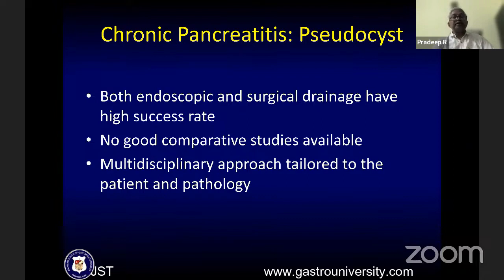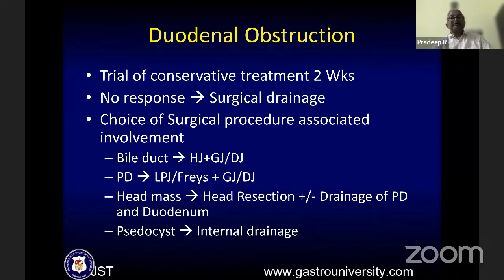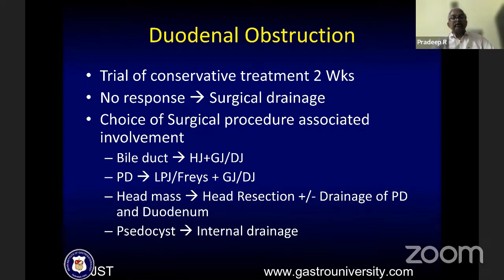Duodenal obstruction can be due to edema, fibrosis, or pseudocyst — producing a long smooth narrowing of the duodenum, sometimes associated with biliary obstruction. A trial of conservative treatment for two weeks is advocated because if it is due to edema, it usually subsides. Otherwise, depending on associated complications, bile duct drainage with GEA or duodenal jejunostomy is needed. If there is a head mass associated with duodenal obstruction, head resection with or without duodenal drainage is advocated.